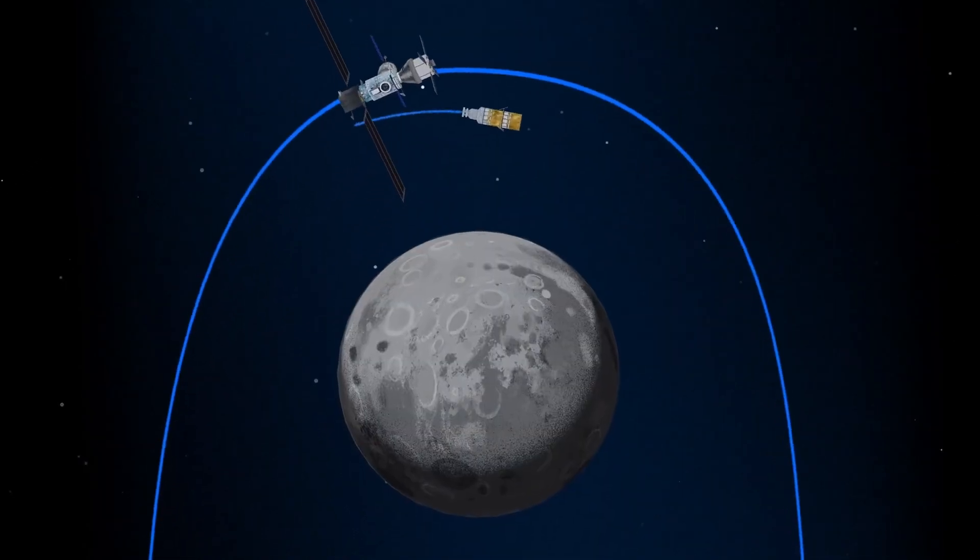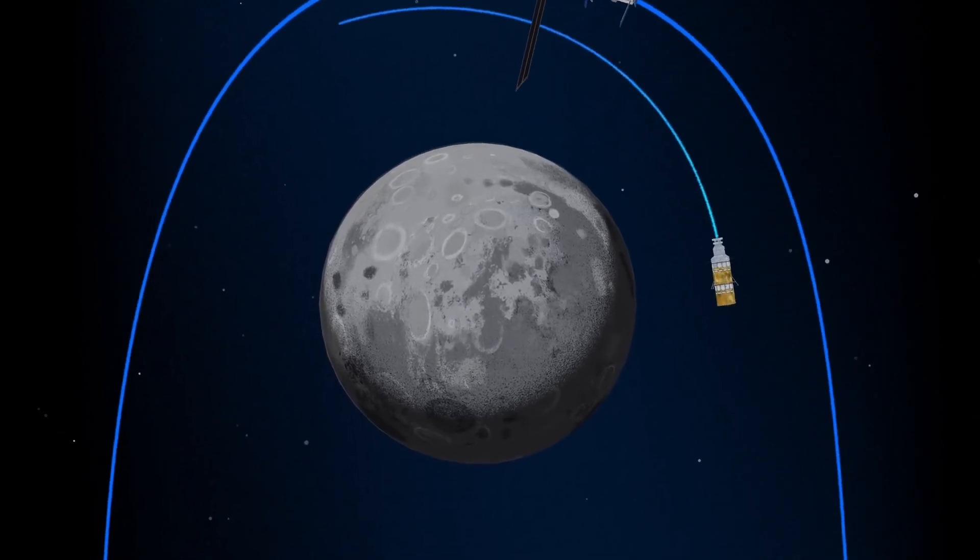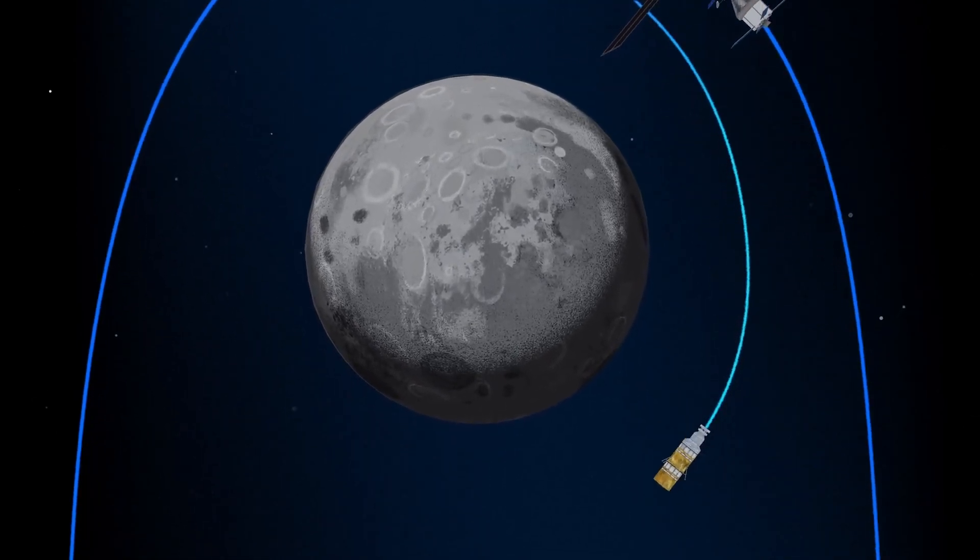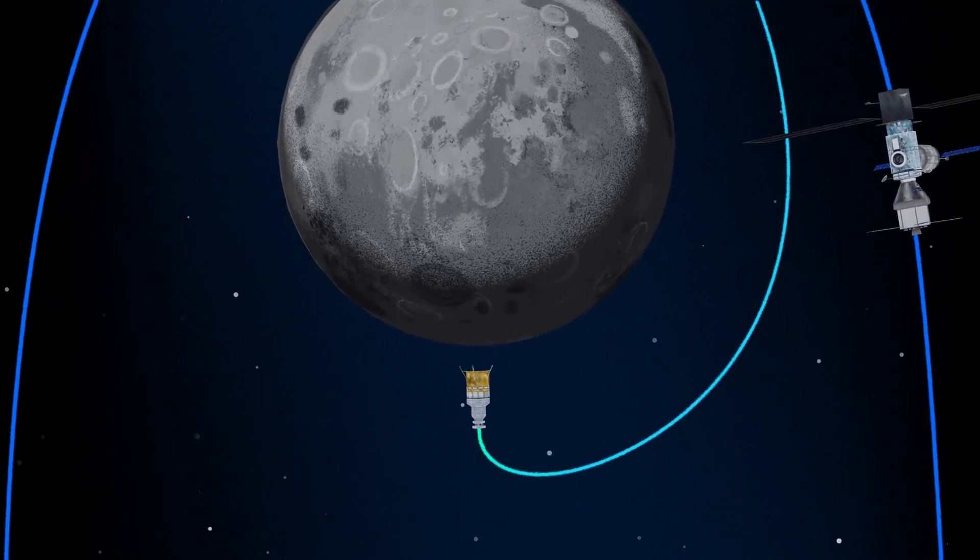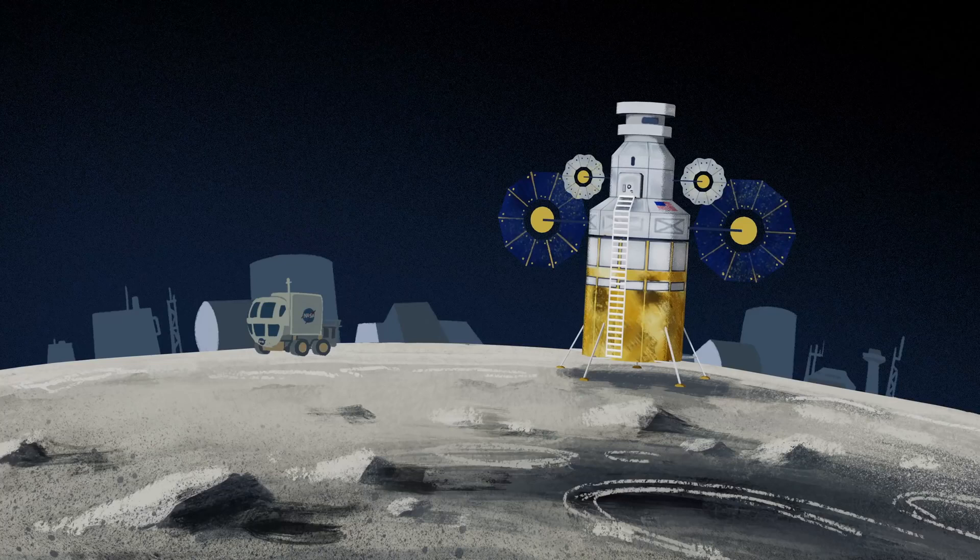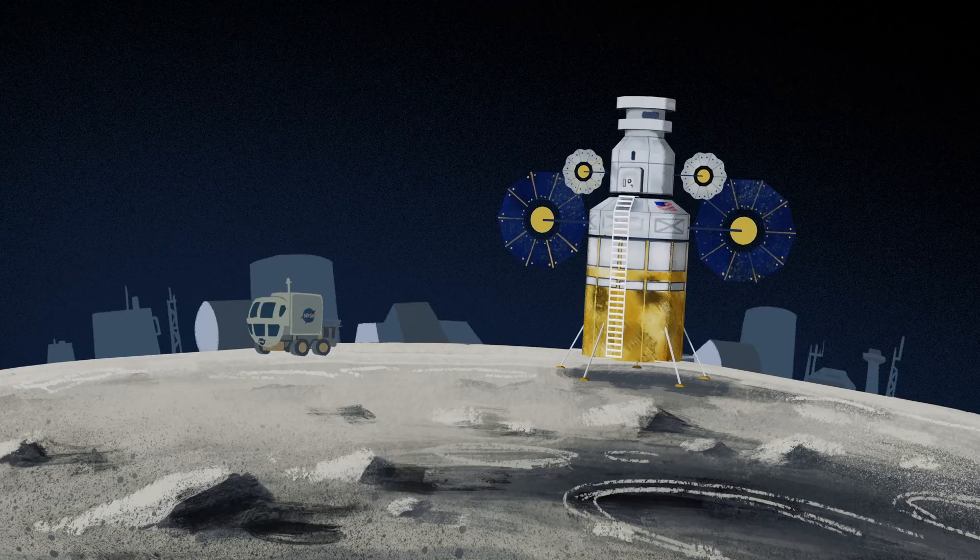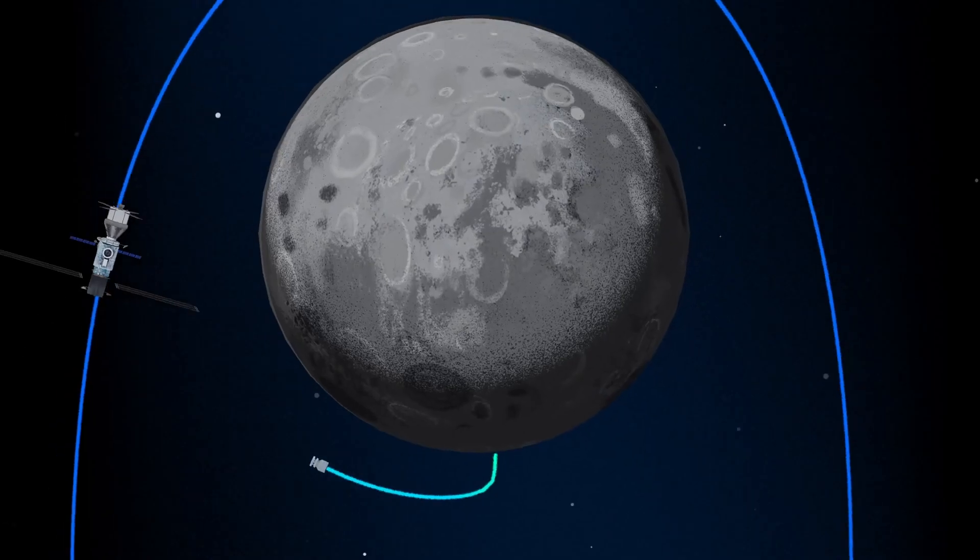The lunar lander system itself is built for three unique steps: descending from the halo orbit of Gateway down to a low lunar orbit, descending from low lunar orbit to the surface, and once the lunar mission is complete, launching from the surface of the Moon and ascending all the way back to the orbiting Gateway.